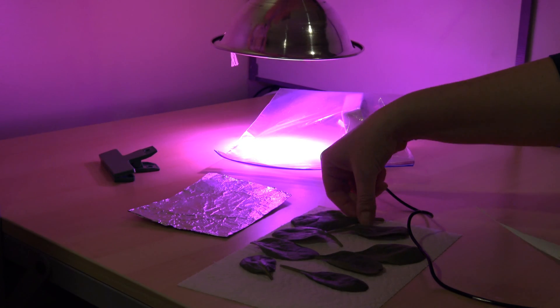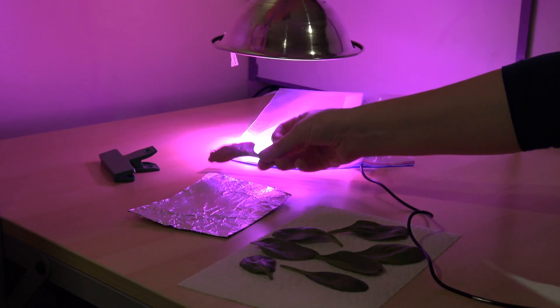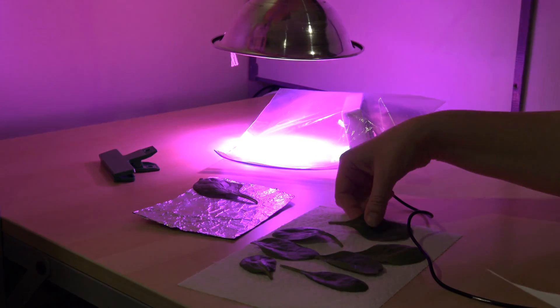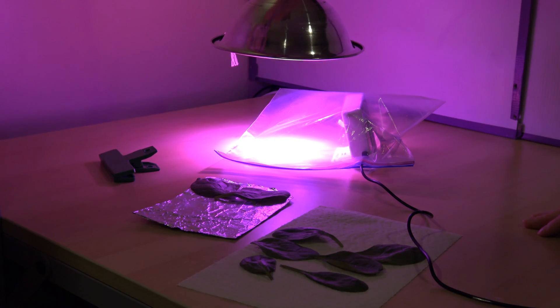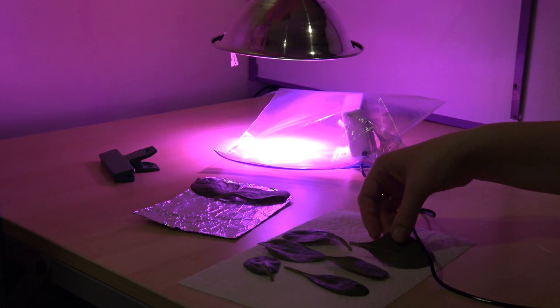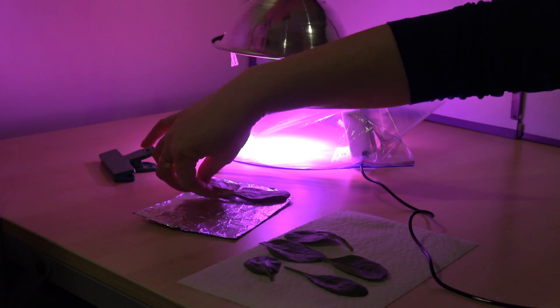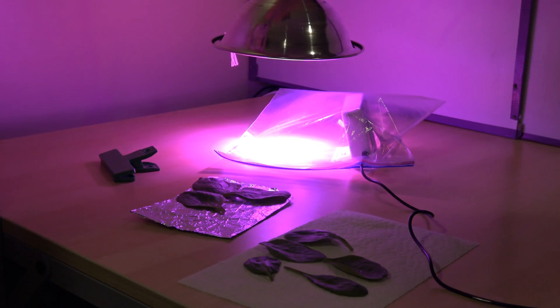We're going to place our leaves on this tray and we want to arrange them so that they're not overlapping too much so we can maximize the area that will be irradiated by our hydroponic grow light.